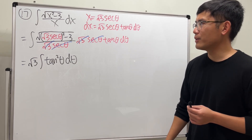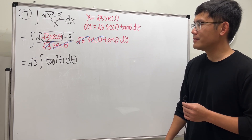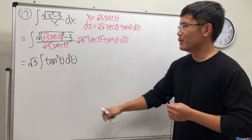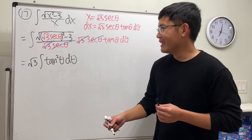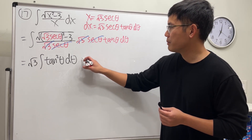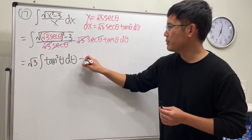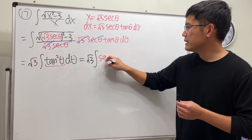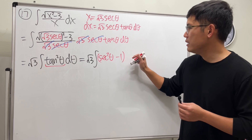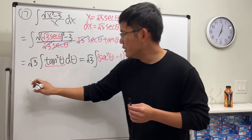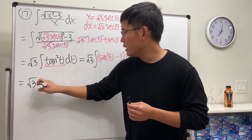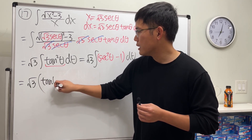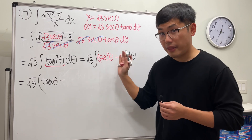To integrate tangent squared theta we use the trig identity: tangent squared theta equals secant squared theta minus one. So this becomes square root of three times the integral of secant squared theta minus one d-theta. Integrating: secant squared theta gives tangent theta, and minus one gives minus theta.